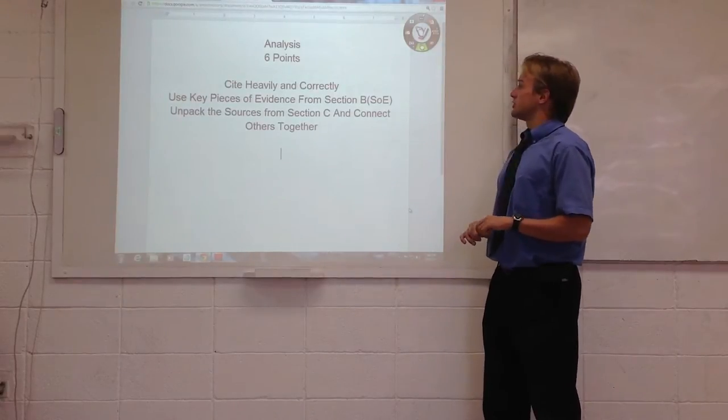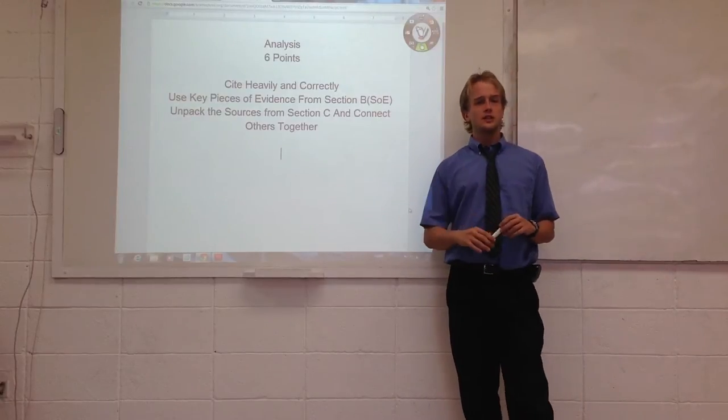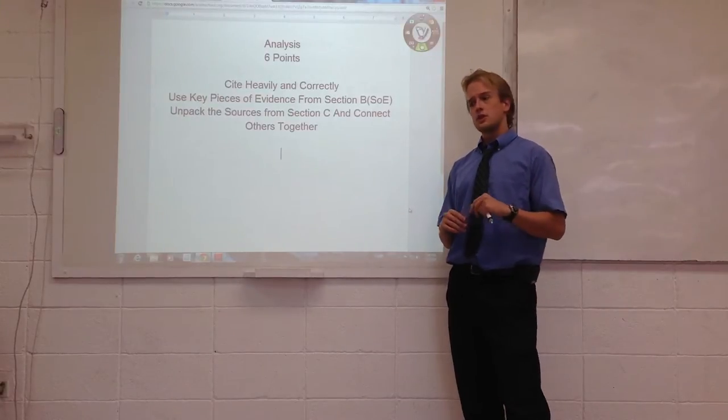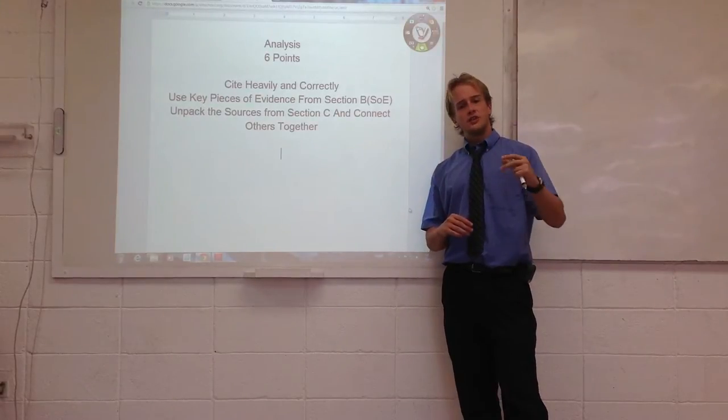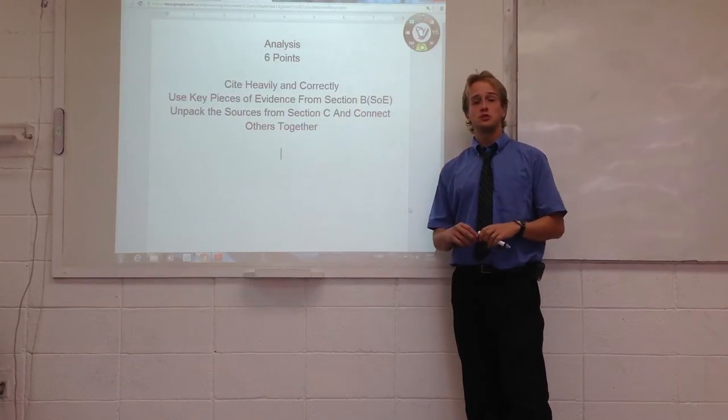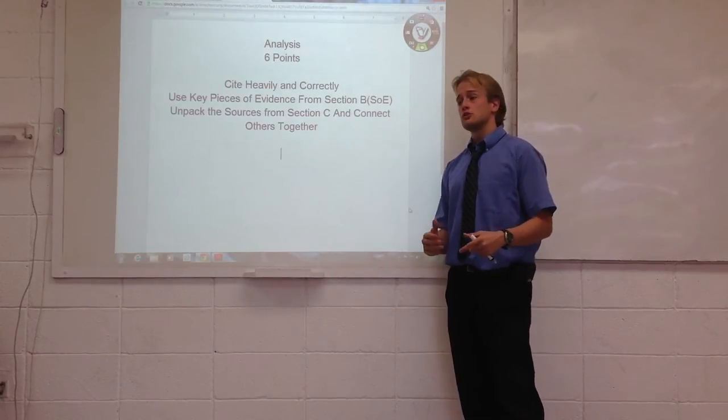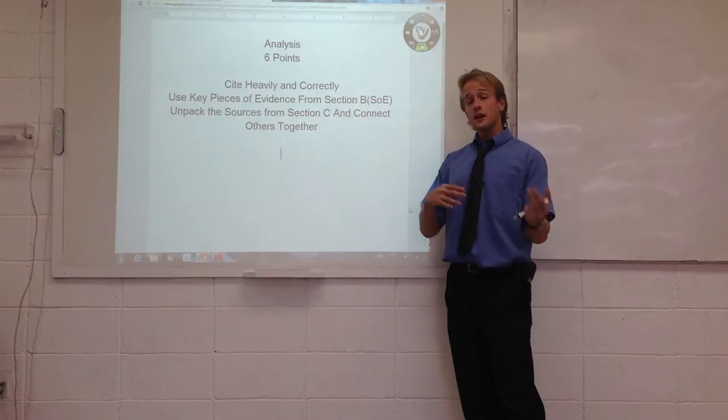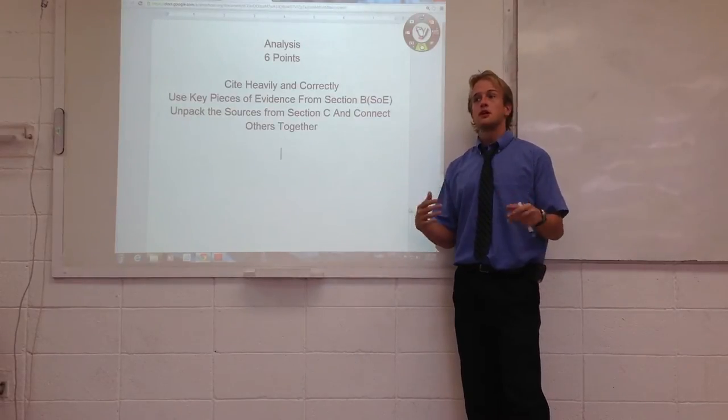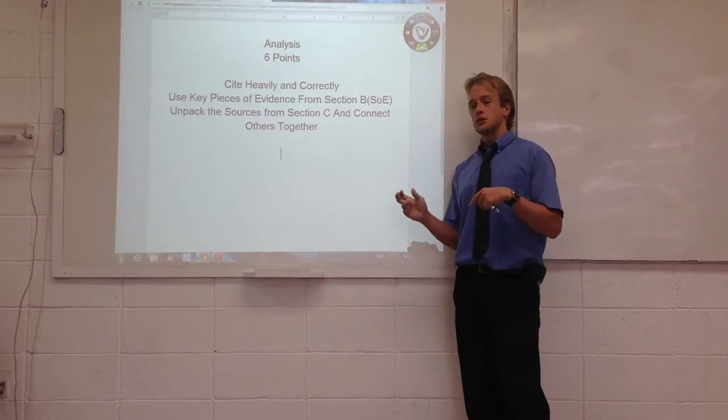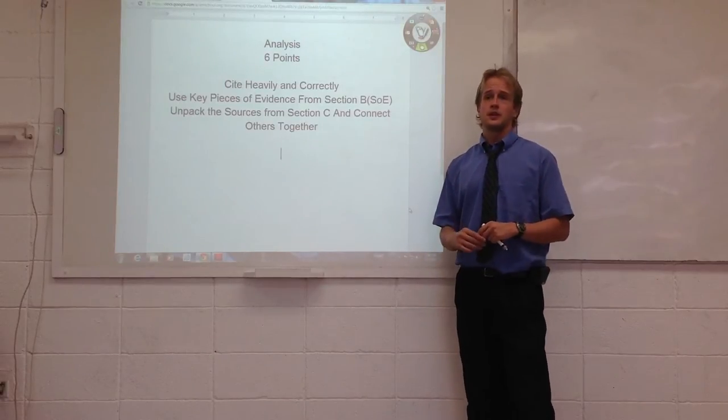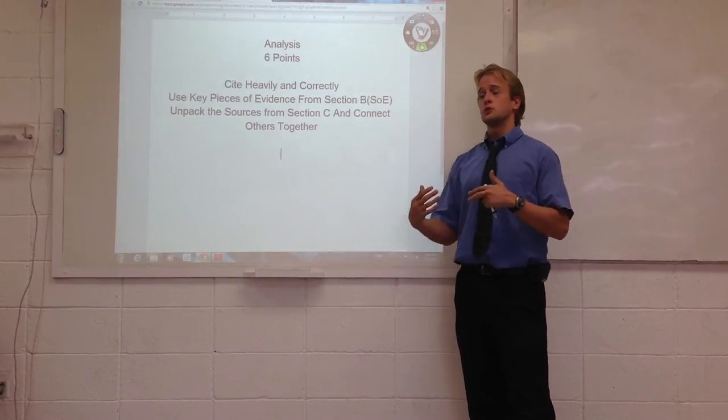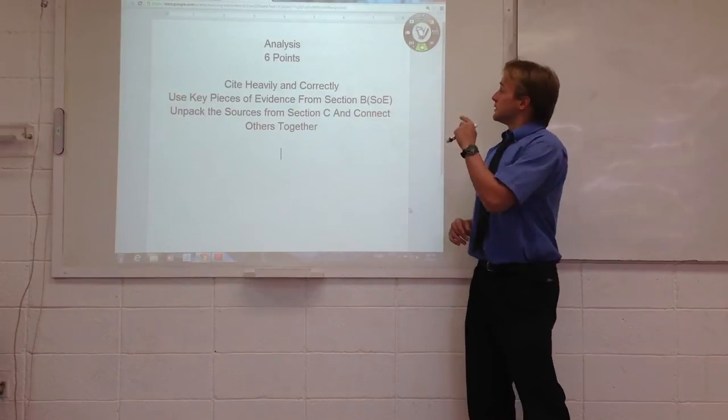What you can think of for the analysis is, first off, cite heavily and correctly. A lot of students don't really do well on the analysis because they don't understand the extent to which citations have to be used. If I had to put a number to it, I would say that students should be expected to produce maybe even up to 15 citations in this section. Definitely, if a student is looking to attain a 5 or a 6, they should have more than 10 citations. In the sample that I showed you today, there's almost 17. So, even though it's maybe 600 to 800 words, there's a lot of words which belong to other historians.